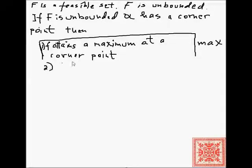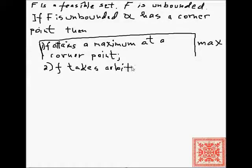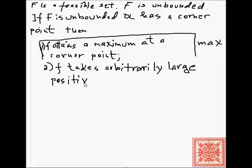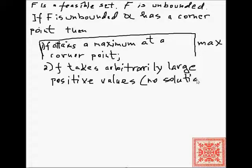Or, if that is not the case, then there is no solution because f takes arbitrarily large positive values on the feasible set F. So we cannot maximize f in this case — the problem has no solution.